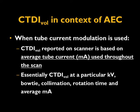With tube current modulation, CTDIvol changes for each slice, so at the end of the scan the scanners provide an average output. CTDIvol at a particular kV, collimation, rotation time, and average tube current all influence the reported CTDIvol value.